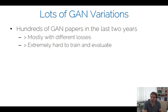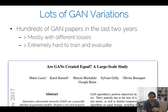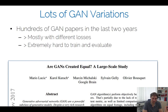The 'GANs Are Created Equal' paper highlights that design choices and loss functions didn't matter as much as knowing how to optimize a GAN. Some variants were harder to optimize or more prone to mode collapse, but in principle all could achieve similar results. This raises the question of whether there is a fundamentally better way to train GANs — which remains an open problem.